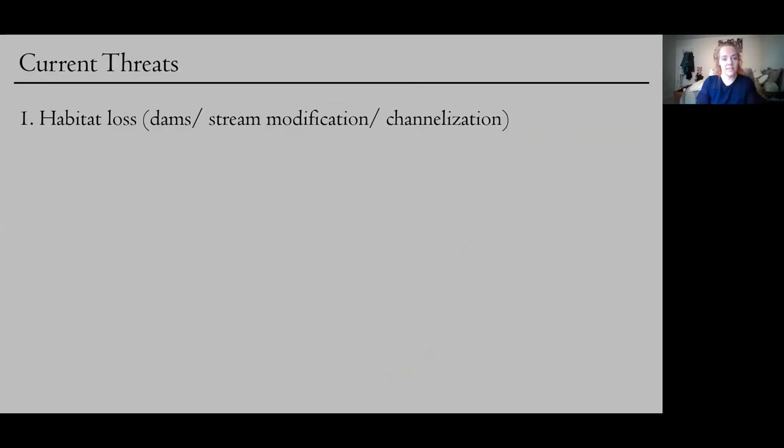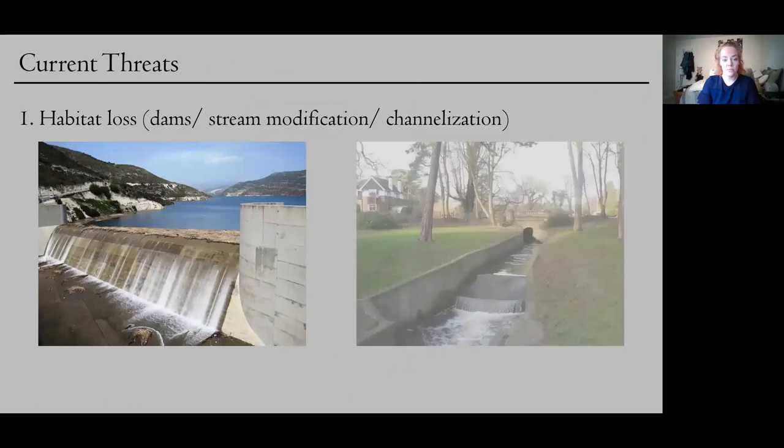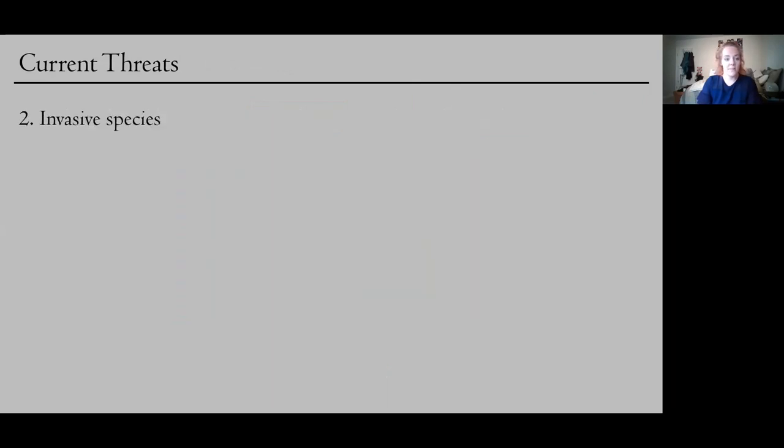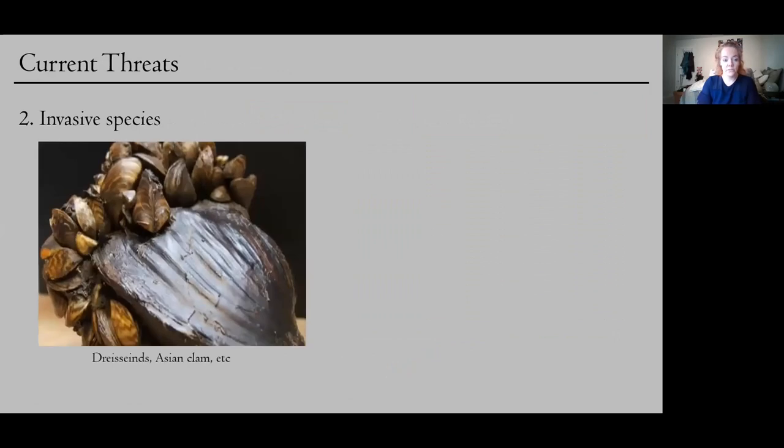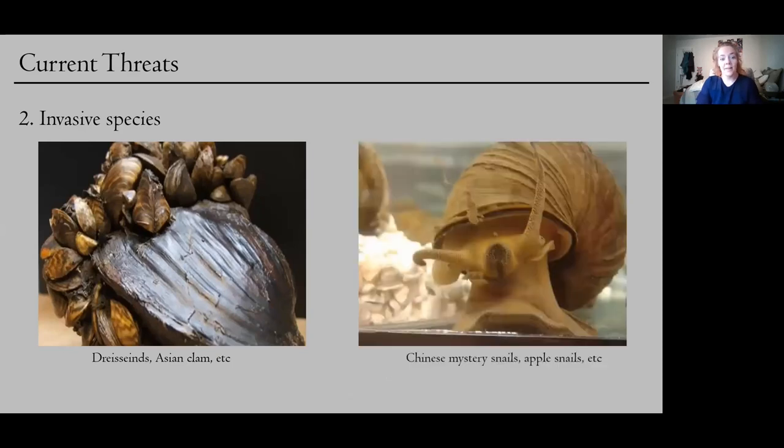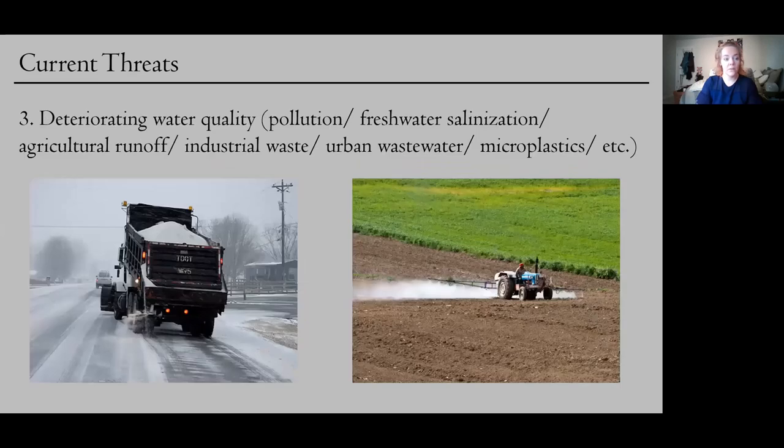So some of the major threats that they're faced with right now include habitat loss from dams and stream channelization which causes habitat fragmentation. Invasive species are especially a big problem for our freshwater mussels. So the gysenids like zebra mussels and quagga mussels can out-compete our native mussels for food and resources. And as you can see in this image here, they can actually stick to the shells of our native mussels to the point that our mussels can't open anymore to breathe or eat. And there have been some evidence for negative interactions between invasive snail species like the Chinese mystery snail and our native snails. And then again getting more into what I do, deteriorating water quality is a really big problem as these organisms tend to be quite sensitive to water quality and pollution. One of the biggest concerns right now in this field is freshwater salinization due to road salt runoff.